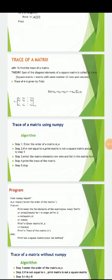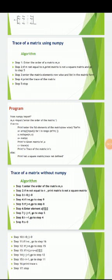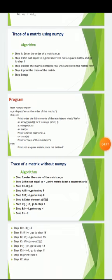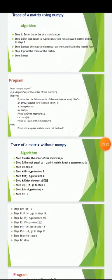We can find the trace of a matrix using NumPy or without NumPy. If using NumPy, we import the NumPy module. For trace using NumPy, the first step is to import NumPy, then enter the order of the matrix m and n. If m is not equal to n, print 'matrix is not a square matrix' and go to step 5. Otherwise enter the matrix elements row-wise, then print the trace of the matrix and stop.